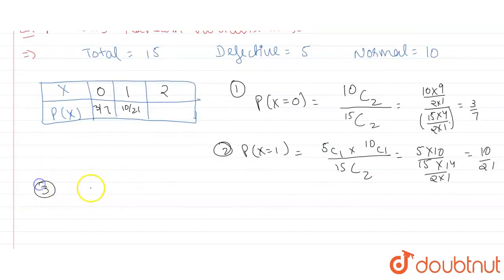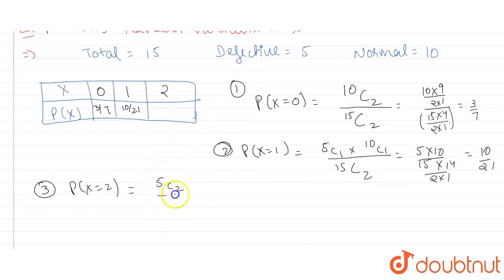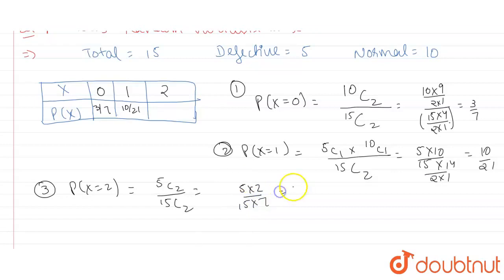The third part: P(X=2) means both bulbs are defective — we have selected both bulbs from the defective part. So P(X=2) = 5C2 / 15C2 = (5×4/2) / (15×14/2) = 10/105 = 2/21.